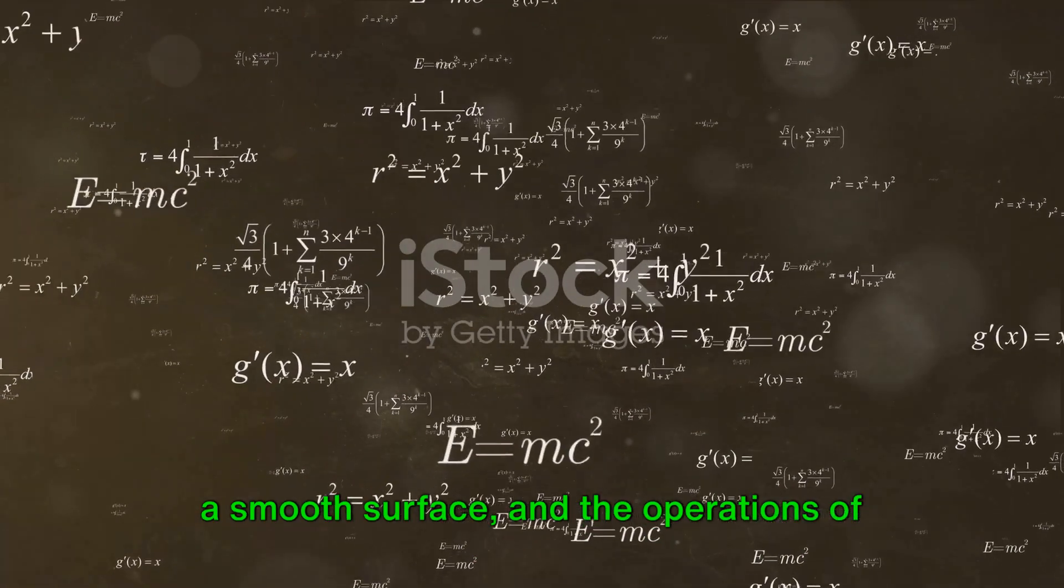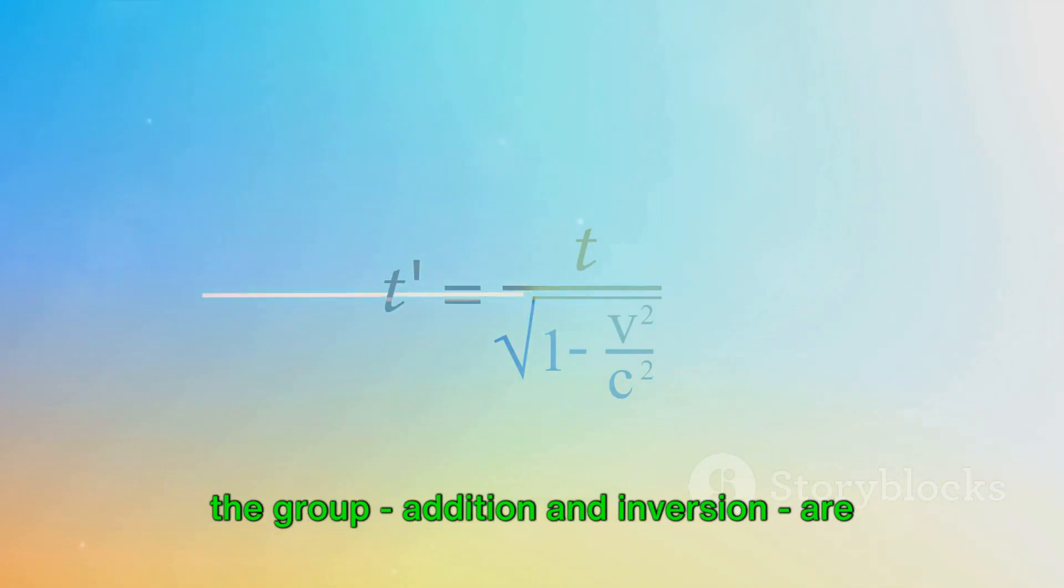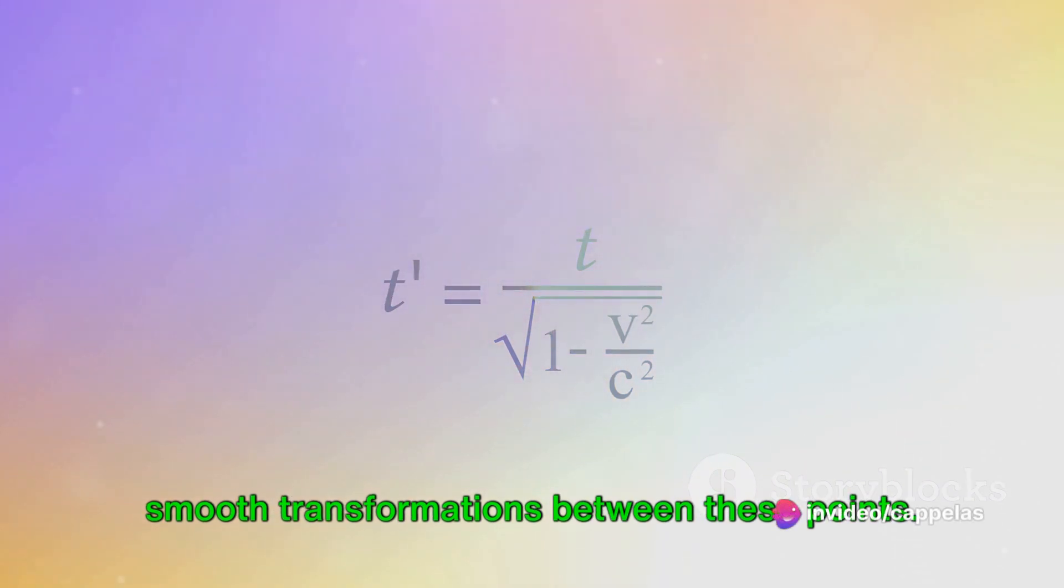The group elements are akin to points on a smooth surface, and the operations of the group, addition and inversion, are smooth transformations between these points.